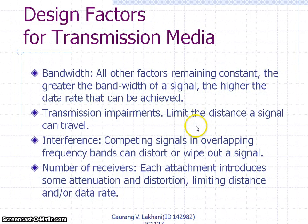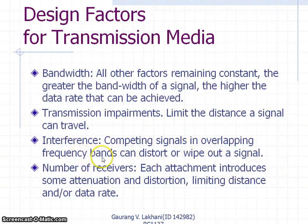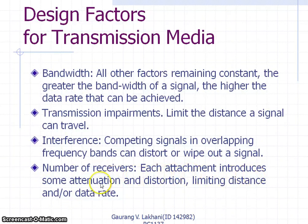Transmission impairment limits the distance a signal can travel. Interference from competing signals in overlapping frequency bands can distort or wipe out a signal. With respect to number of receivers, each attachment introduces some attenuation and distortion, limiting distance and/or data rate.